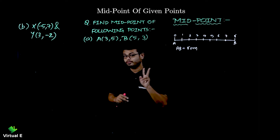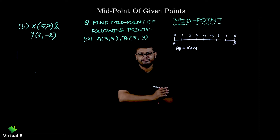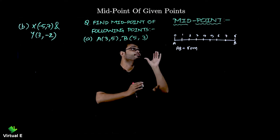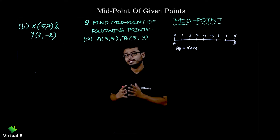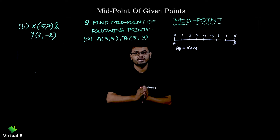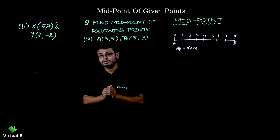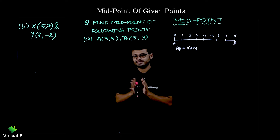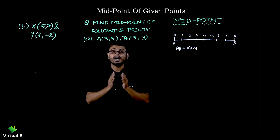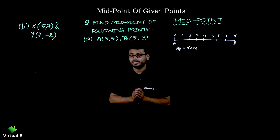So far we discussed the topic of two points, then three points, then four points. Let's come back to two points again — we are going to discuss the midpoint. What does midpoint mean? If you have a line, you divide it into two equal parts. It plays a very important role — like eating a chocolate and dividing it into two halves.